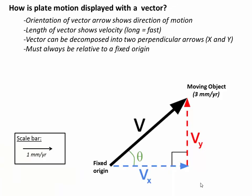So how do we describe plate motions as a vector? Here's a few of the fundamental ideas. A vector is just an arrow, and the orientation of the arrow, or the angle, shows the direction that one plate, or one moving object, is moving relative to some fixed reference frame. Likewise, the length of the vector is scaled to show how fast the object is moving, so longer vector arrows denote faster objects.